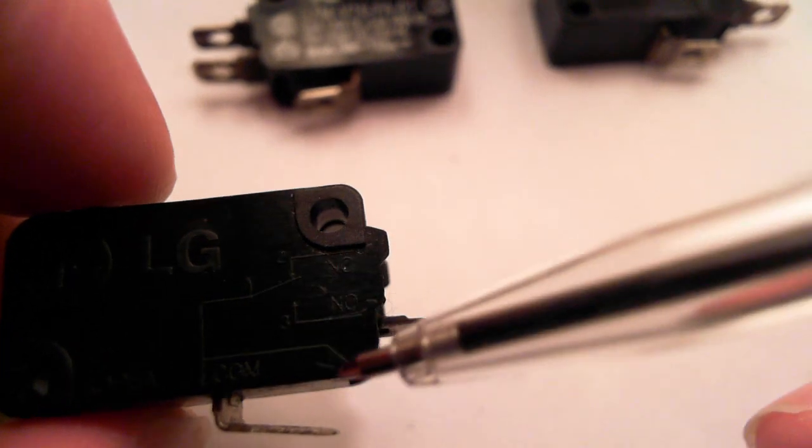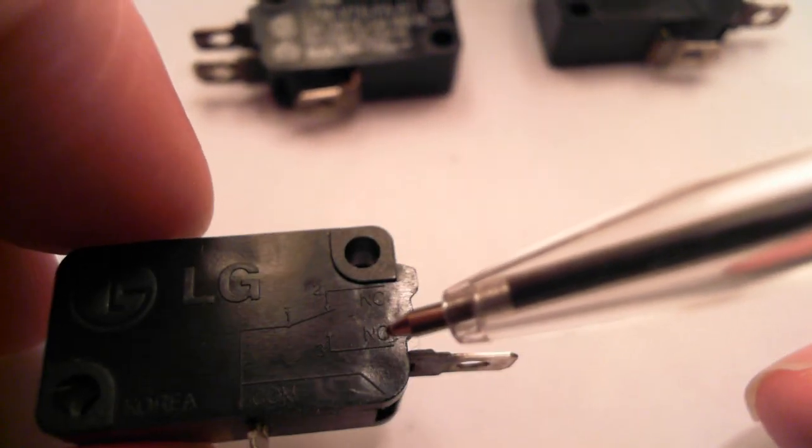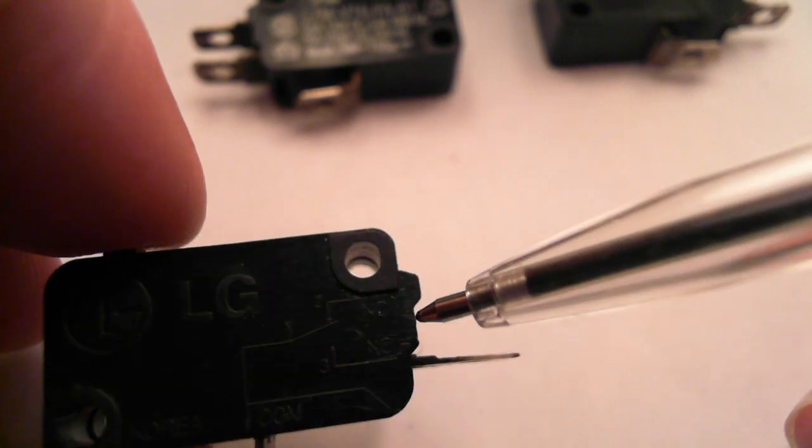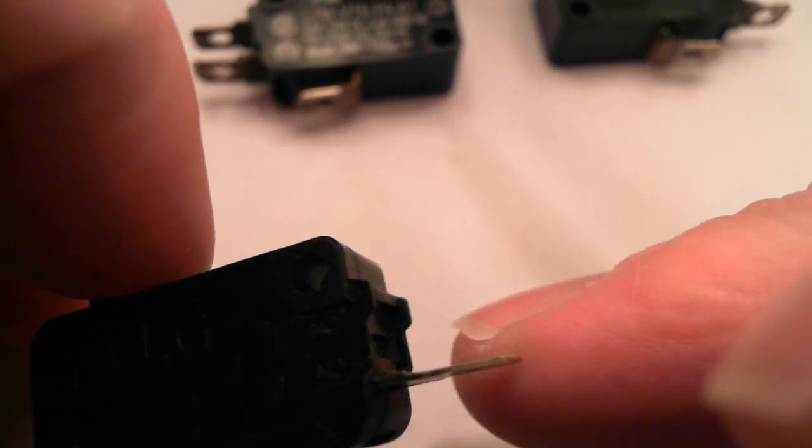These markings here relate to the spade here, the spade terminal here. This one has a normally closed missing. It is a configuration that does not require that terminal. And here, the single pole, double throw.